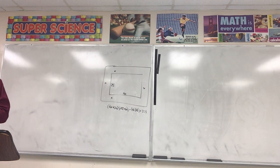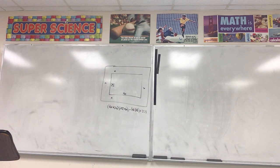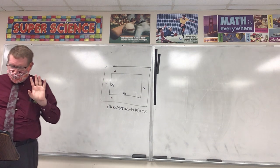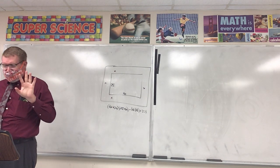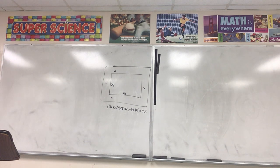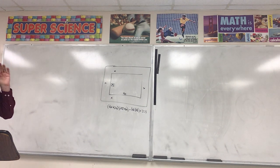Alright, number three: What is the octet rule? The octet rule is going to be stable when they have eight valence electrons in the outer shell. Hydrogen and helium only have two valence electrons in their shell. Okay, really there are five atoms that have exceptions besides just hydrogen and helium. There's hydrogen, helium, lithium, beryllium, and boron.